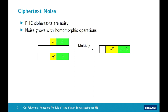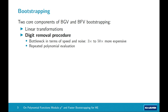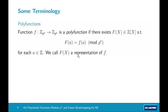Fortunately there exists an operation that can reduce the noise — this is what we call bootstrapping. For BGV and BFV, bootstrapping consists of two main components: the linear transformations and the digit removal procedure. However, for practical parameter sets, the digit removal procedure can be three to fifty times more expensive than the linear transformations, making it the true bottleneck. To improve bootstrapping we should really focus on this digit removal step, which internally consists of a series of polynomial evaluations.